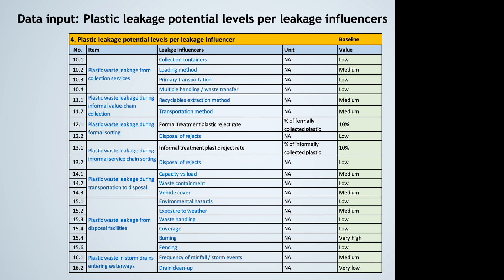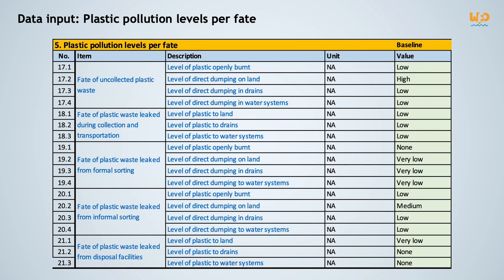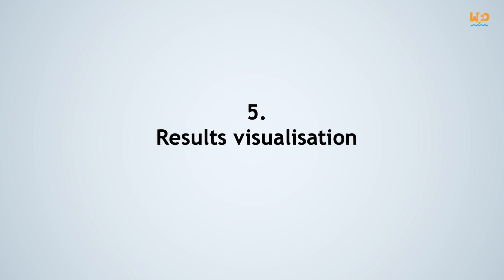In this section of the waste flow diagram Excel sheet, the local experts have rated each leakage influencer based on their observations. Remember that the chosen values should be the average of the observations. For example, the leakage potential of waste handling at the disposal site is low, which reflects that most of the collected waste from Megalopolis is sent to the sanitary landfill rather than to the open dump site. Now that all the leakage influencers have been assigned a leakage potential, it is time to assign values for the plastic pollution levels per fate — the chosen value should represent the average overall situation. The waste flow diagram Excel sheet is now complete.